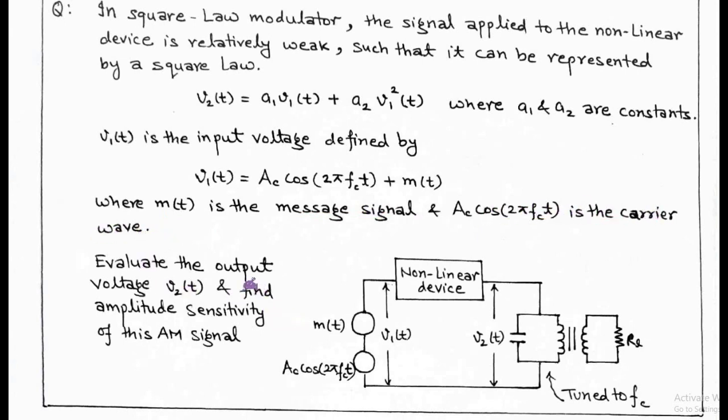We have to determine the output voltage v2(t) and find the amplitude sensitivity of this AM signal.